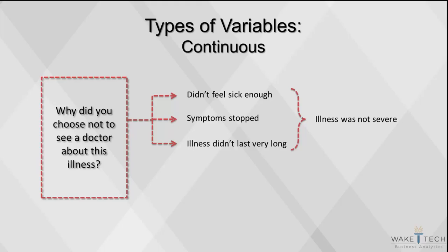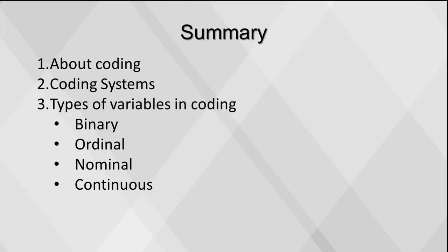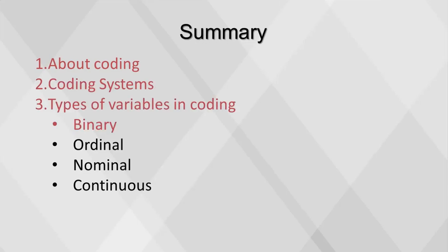You will also need to code 'don't know' responses. Typically, don't know is coded as 9. That concludes our video on coding with variables. Today we covered some basic information about coding, coding systems, and types of variables in coding, including binary, ordinal, nominal, and continuous.